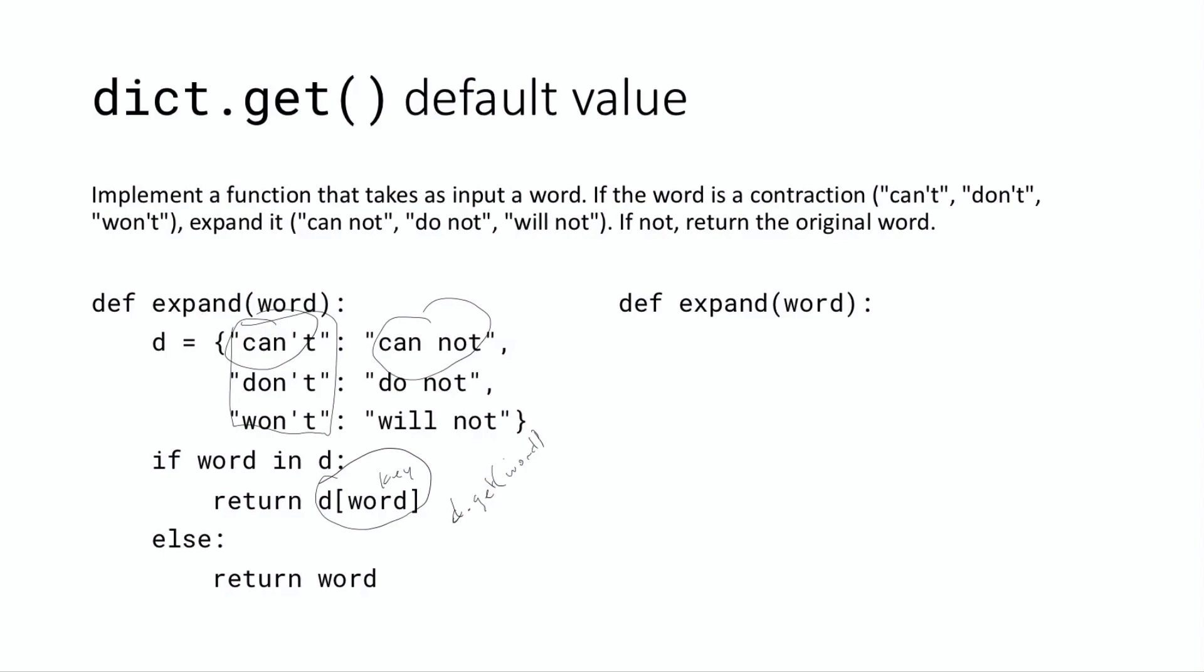And so you may say, well, why is that interesting at all? I like the square brackets more, I think they're more clear. And I agree with you, but there is actually a reason why it's interesting. And that's because the get function takes, in addition to a key, it has this optional parameter that's called the default.